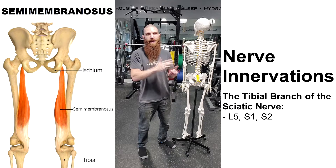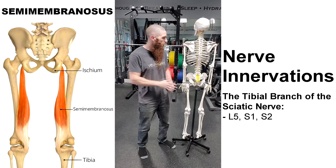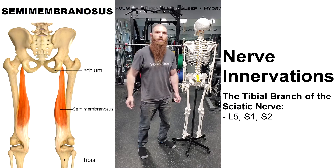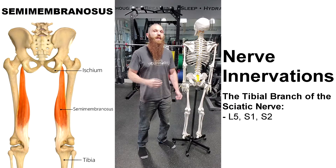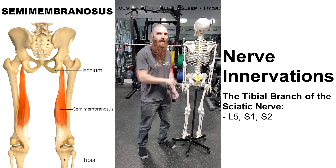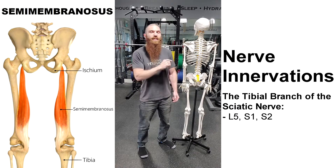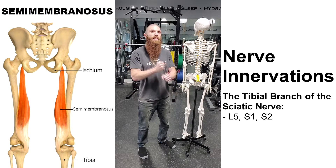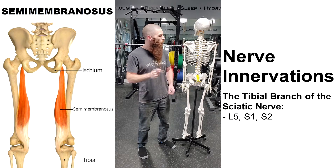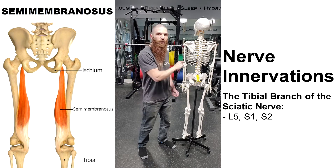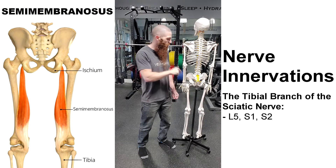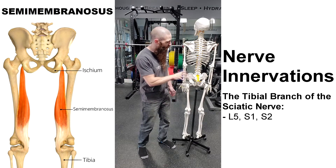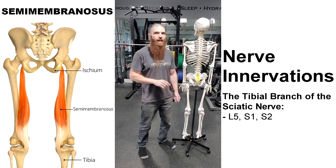That can limit blood flow and oxygen to the area, which can lead to things like low back pain, hip pain, knee pain, ankle pain, and foot pain. We would want to address that immediately, and one of the ways we could do that would be to do some ELDOA exercises for the nerves in that area. The whole purpose of an ELDOA is to create space within a joint, which can improve nerve function, and if we improve function, the nerve will send the signal to the muscle to fire properly, improving blood flow and oxygen to that area.